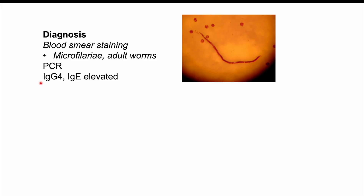The key diagnostic difference is that in loa loa, microfilariae are sheathed, whereas in river blindness they are non-sheathed. So if you were to see a skin snip biopsy from someone with onchocerciasis — river blindness — and you see sheathed microfilariae, then they also at least have loa loa infection, because the worm that causes river blindness is unsheathed.